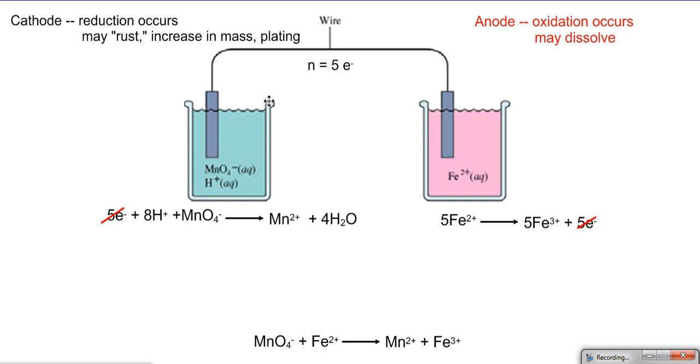Now this picture is missing something very important in the fact that as the electrons move from the iron, as the iron loses electrons, they travel through the wire to the permanganate, which becomes manganese ions. Electrons always flow from anode to cathode. However, as they flow through this wire towards the cathode, there's eventually going to be a buildup of a negative charge.